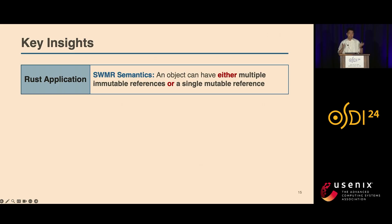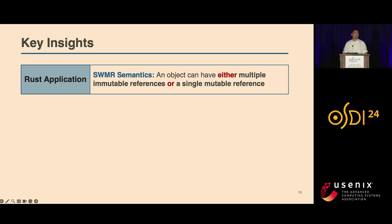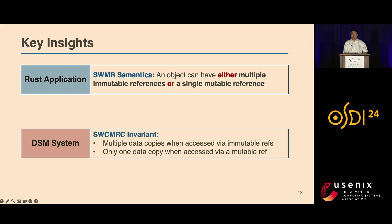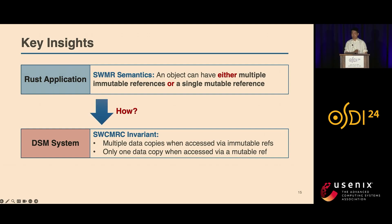To summarize, in a Rust program, the ownership model ensures that there is either only one mutable reference or multiple immutable references to an object. It explicitly provides the exact single-writer multi-reader semantics that we want. If we are accessing memory through a mutable reference, we know that this is the single writer; and if we are accessing through an immutable reference, we know they are the multiple readers. So it directly solves the first challenge. But there is a second challenge: achieving coherence in DSM requires the system to maintain the single-writable-copy and multiple-readable-copy invariant. The gap is how to leverage the single-writer semantics to reduce synchronization operations and efficiently maintain that invariant.